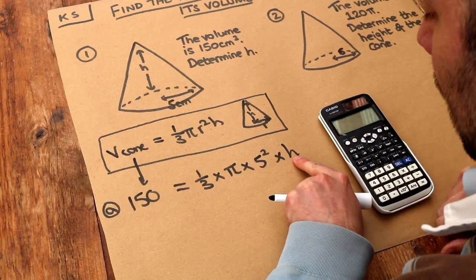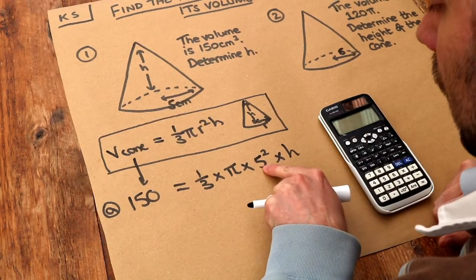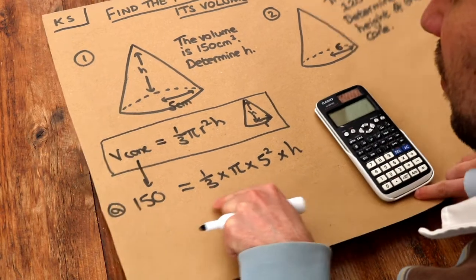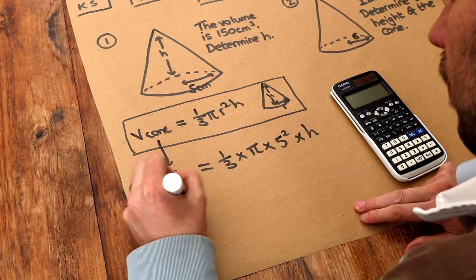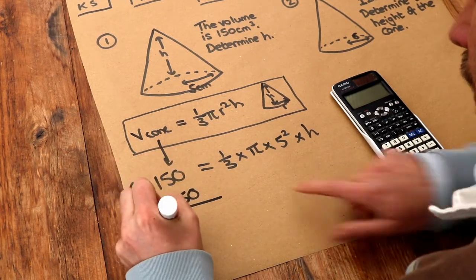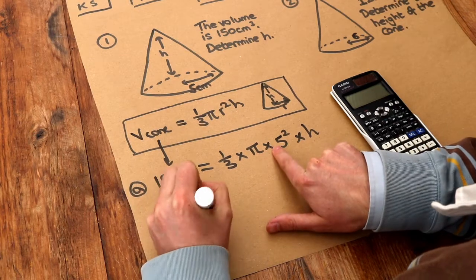Now we want to get h on its own. It's being multiplied by the five squared, the pi, and the third, so we just need to divide that 150 by all of this stuff here. So if we do 150 divided by a third times pi times five squared,